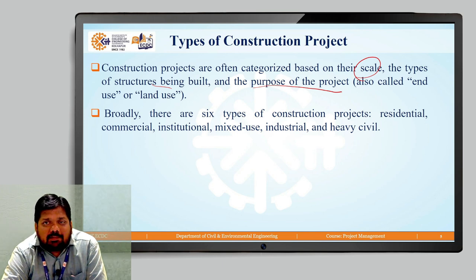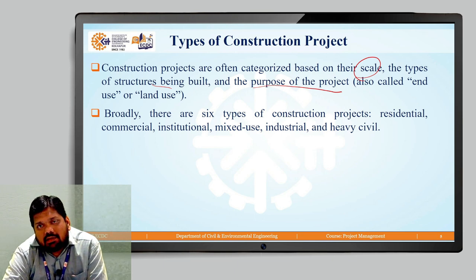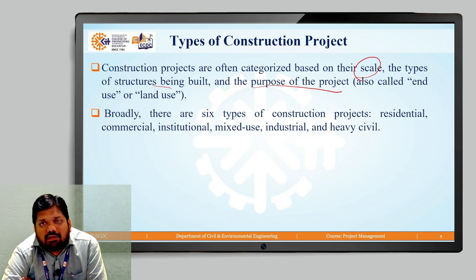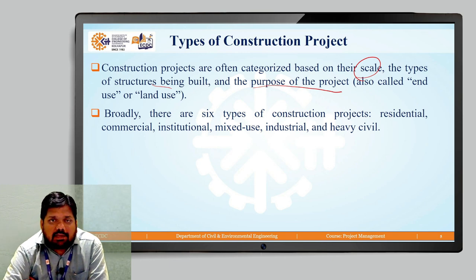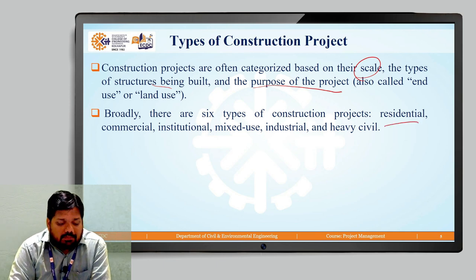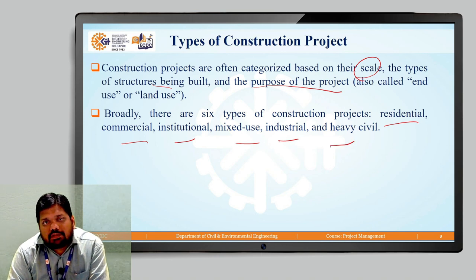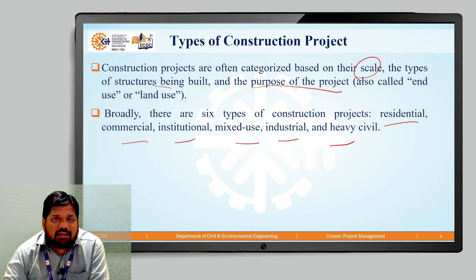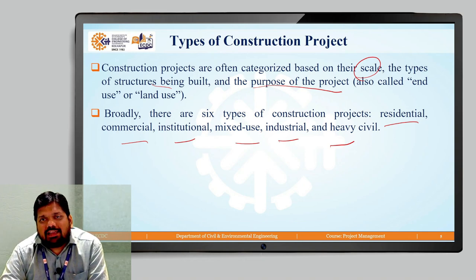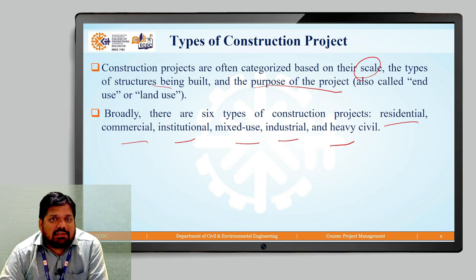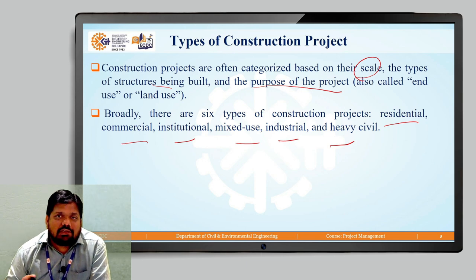Broadly, there are 6 types of construction projects that we can categorize. You might see different classifications in various books, but generally we categorize construction projects into these 6 types: residential, commercial, institutional, mixed use, industrial, and heavy civil projects.